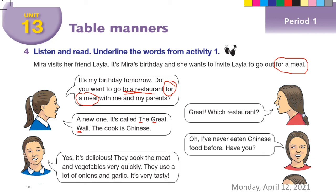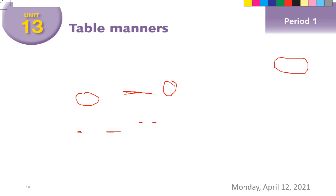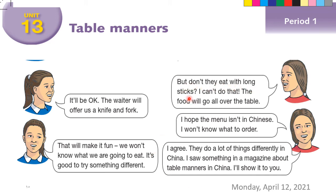'The cook is Chinese.' Oh, Mira has never eaten Chinese food. Have you ever eaten it? 'Yes, it's delicious. They cook the meat and vegetables very quickly. They use a lot of onions and garlic. It's very tasty.' Yes, their food is delicious — they cook meat and vegetables quickly, use lots of onion and garlic. 'But don't they eat with long sticks?' — meaning long chopsticks. 'I can't do that — the food will go all over the table.' 'Go over' means to scatter.